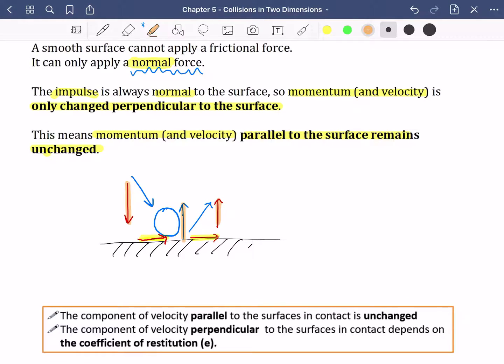So let's just read what I've written down here. The component of the velocity parallel to the surfaces in contact is unchanged. So this is the parallel component of this velocity, and this is the parallel component of this velocity. And I've highlighted them both in yellow because they are unchanged. And I'm going to have to do something up here.